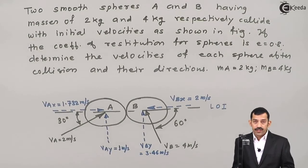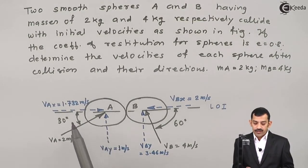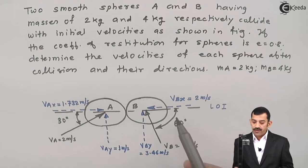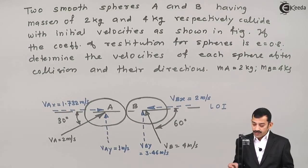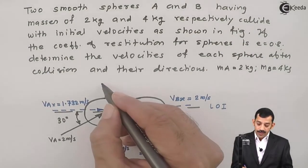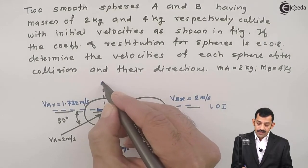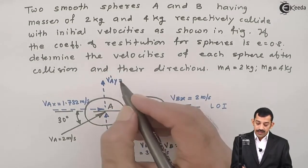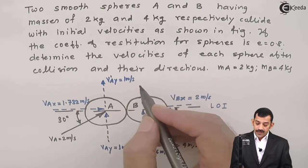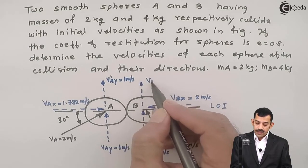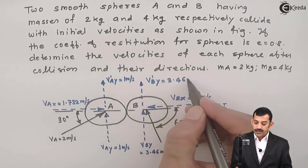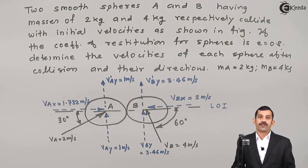In the coefficient of restitution and conservation of momentum equations, we will use only the horizontal components of velocities. vAx rightward is substituted with a positive sign, and vBx leftward is substituted with a negative sign. The components of velocities perpendicular to the line of impact remain the same after impact. Therefore, vA'y remains 1 m/s and vB'y remains 3.46 m/s after impact. We only need to find the horizontal components.